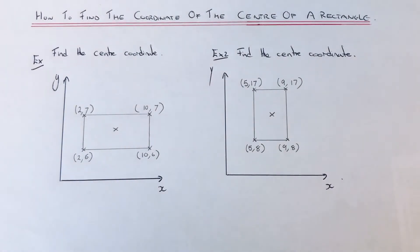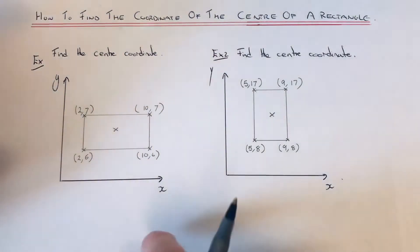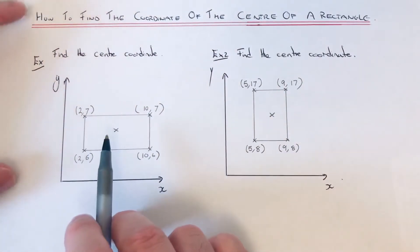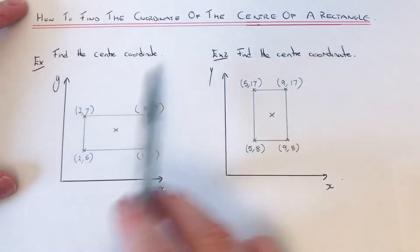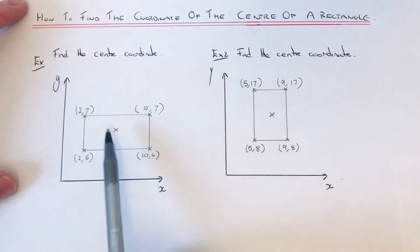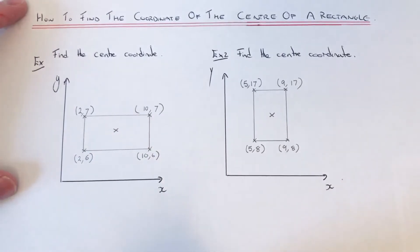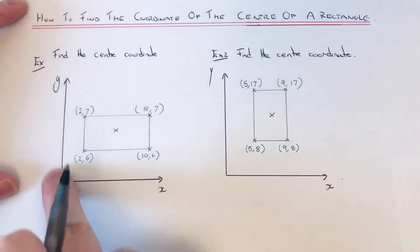Hi guys, welcome back, this is Math 3000. Today I'm going to show you how to find the coordinates of the center of a rectangle given the coordinates of the four corners. Let's have a look at the two examples we have, so we've got to find the center coordinate of this rectangle here. The best way to do this is to mark the numbers along the x and y axis.